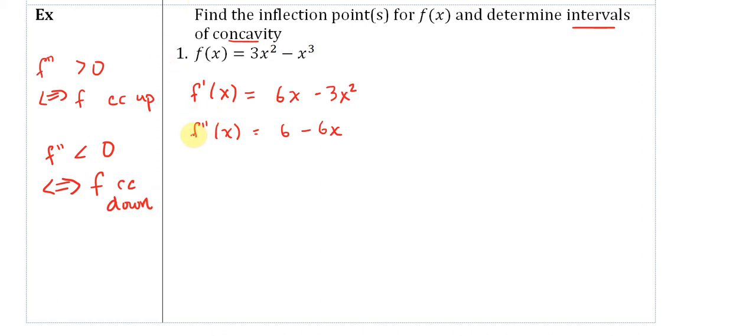To figure this out, we set f double prime equal to 0 and solve for x. So 0 equals 6 times 1 minus x. That means x equals 1. That's the only place where the second derivative is equal to 0.